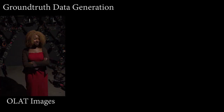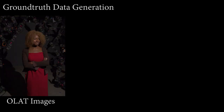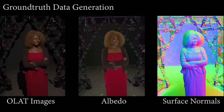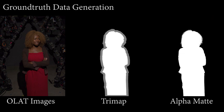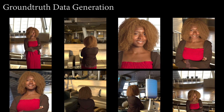To train our matting and relighting models, we capture one-light-at-a-time style images of 70 diverse individuals in a light stage system using 58 different cameras. From these images, we recover ground truth albedo and surface normals. Given a clean plate and a tri-map, we also introduce a technique to recover high-quality ground truth alpha mattes for each viewpoint for the OLAT dataset captured inside the light stage. Then, using many high-resolution HDR lighting environments, we generate synthetic portraits using image-based relighting, compositing relit subjects into novel backgrounds with consistent illumination.